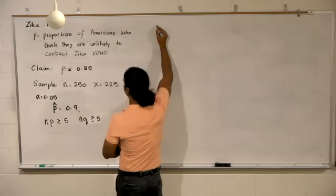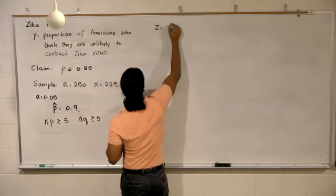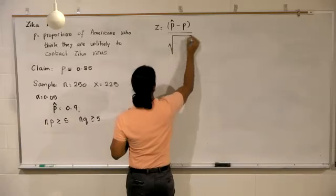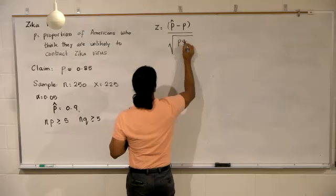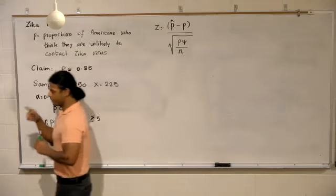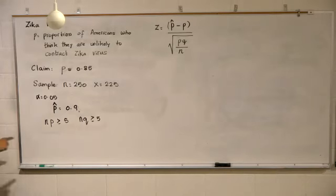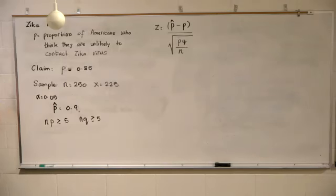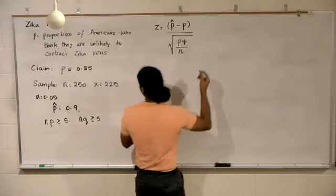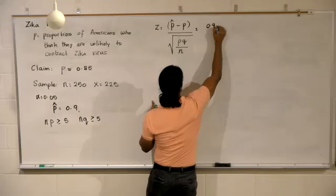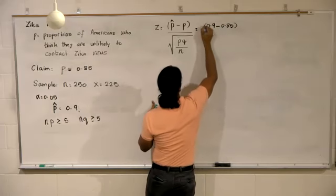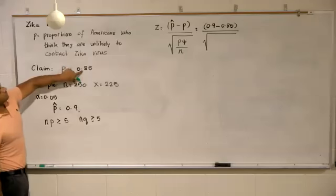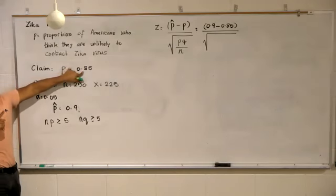So we have to find the test statistic. When I walked around, the mistake that some of you made is not putting this within parentheses. If you did that, you get a negative answer, which is incorrect. The claimed value is 0.85. So if p is 0.85, what is q?